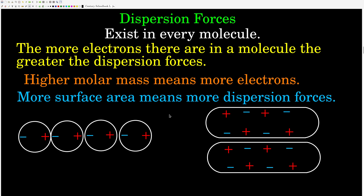The next thing that influences the strength of dispersion forces is the shape of the molecule. A round molecule has less surface area than a cylindrical molecule. Because cylindrical molecules have more surface area as they come up next to each other, they can create more regions of induced dipole, and the more regions there are, the greater the overall strength of that intermolecular force. These forces are summative — they add up. So if two molecules have about the same molecular weight but one is cylindrical and one is spherical, the cylindrical one will have greater intermolecular force strength.